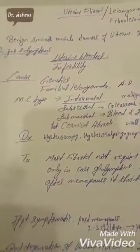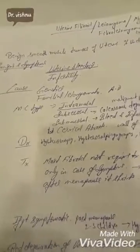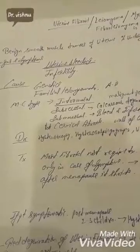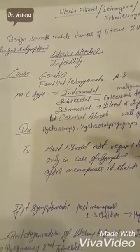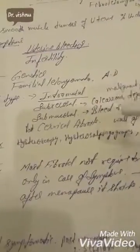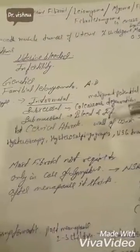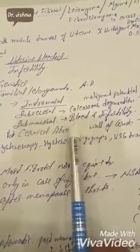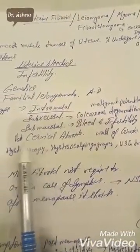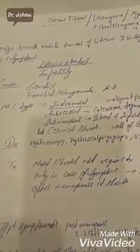In examinations, they are interested in only superficial knowledge about uterine fibroids, so we will cover the basic types. The most common type is intramural, which can undergo malignant change. Subserosal fibroids can undergo calcareous degeneration and have malignant potential. Submucosal fibroids cause bleeding and infertility. Posterior cervical fibroids on the wall of the cervix cause retention of urine.